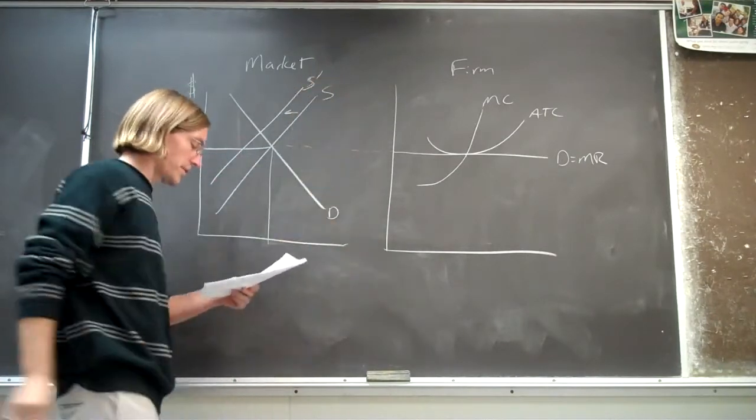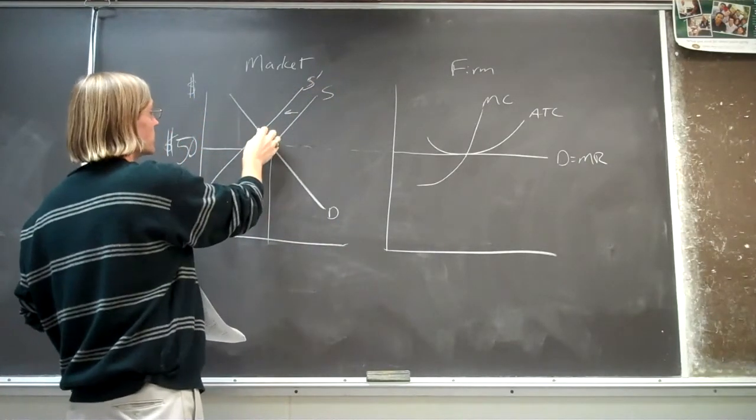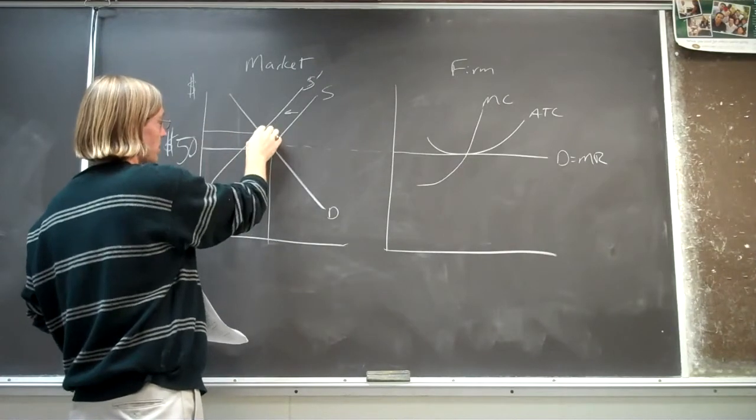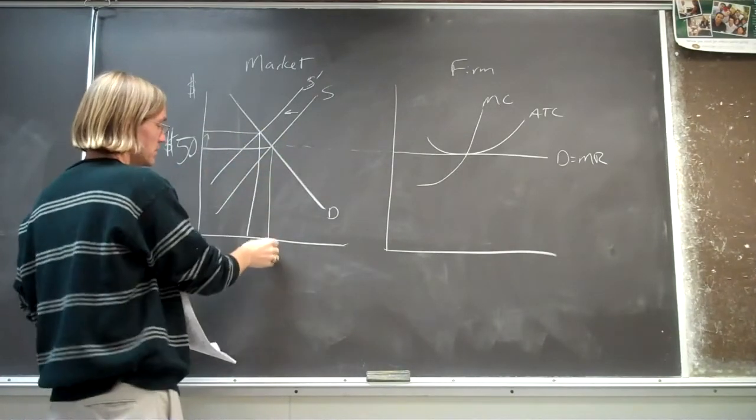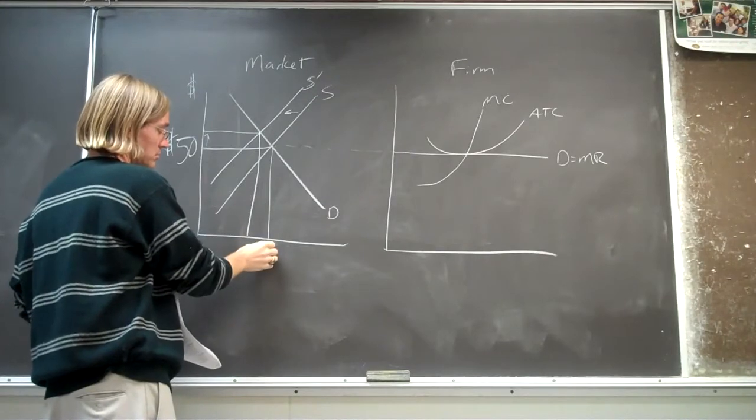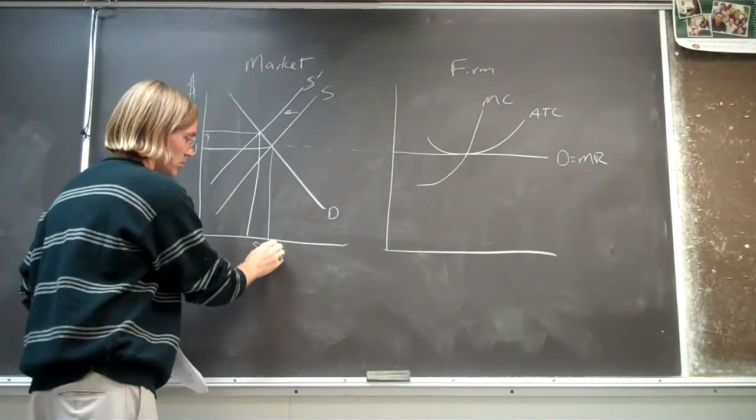So the supply is decreased, so we've got a new market price. It's going to be higher than 50. Equilibrium quantity will have decreased.